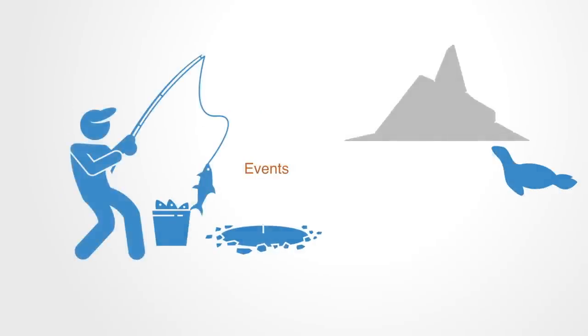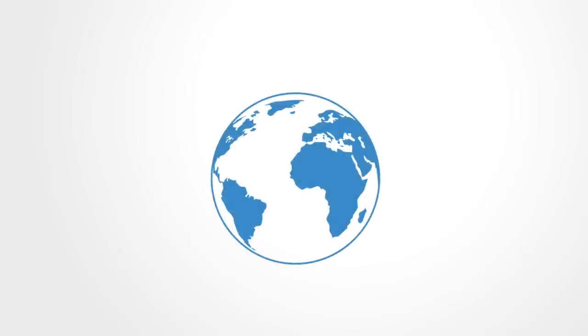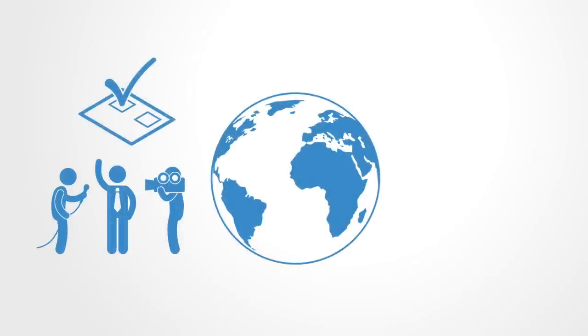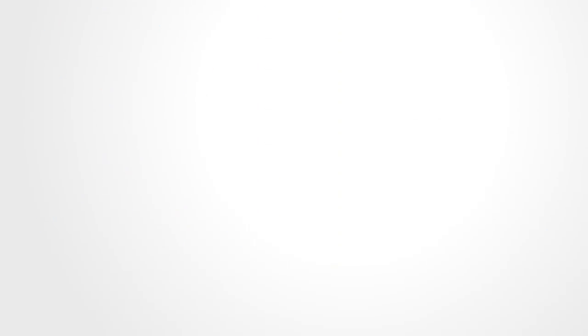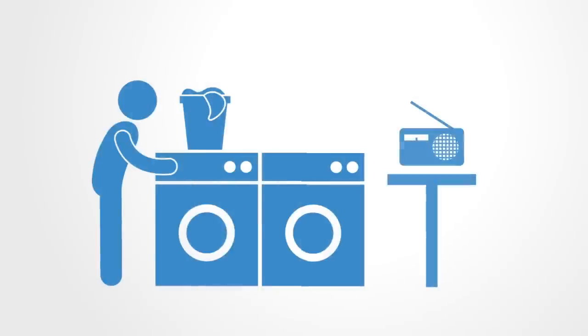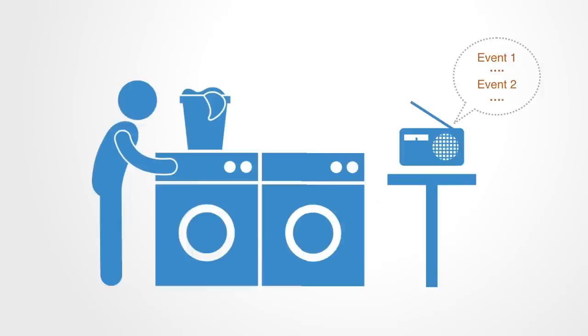If we apply the iceberg model to global issues, we could say that at the tip, above the water, are events, or things that we see or hear about happening in the world every day. That there is a new president in Italy, or that the price of commodities is up. The events that we hear about in the news represent the iceberg tip. Most of the world spends its time at the event level. It is how we perceive the world while being occupied with our daily activities.